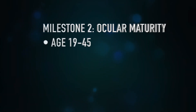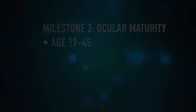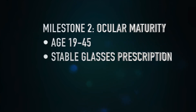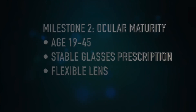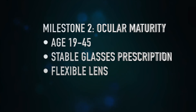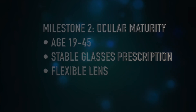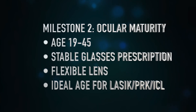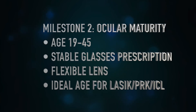Milestone two occurs at about age 19 to 45. In this phase of our lives, we generally have a fairly stable glasses prescription, although it may change slightly. We have a very flexible lens in young adulthood that allows us to focus on near objects. This is a great age to have LASIK, PRK, or ICL depending on your refractive error, your anatomy, and your hobbies and vocations.